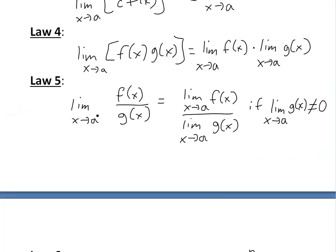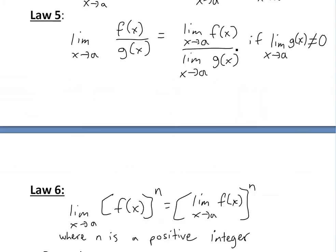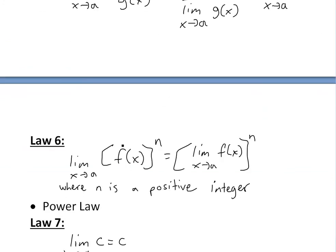If we look at this product law here and let's say g(x) equals f(x), then you're going to get a limit of f(x) times a limit of f(x). You're just going to have this power law. If you keep doing that over and over again, you're going to have this power law here. So the limit of f(x) to the power of n as x approaches a, and then you can just put that inside this bracket and to the power of n here.